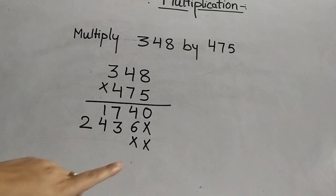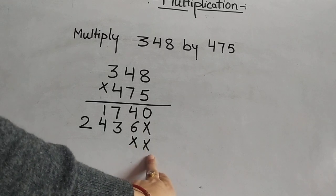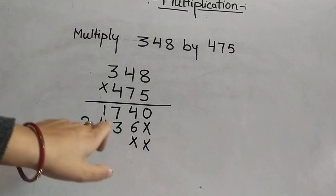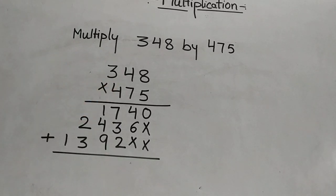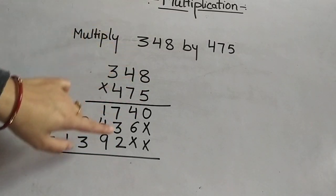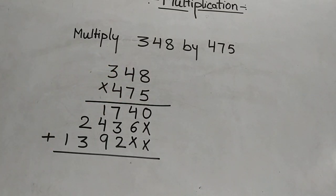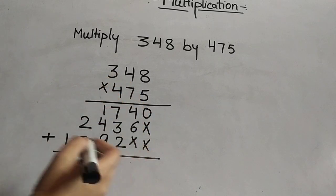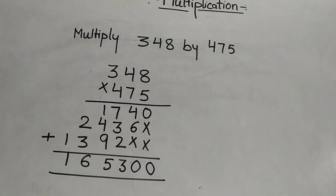Because we have multiplied by the ones digit as well as the tens digit, we will cross in these 2 places — ones and tens. Now we have to multiply by the digit in the hundreds place, that is 4. 4 times 8 is 32, 3 carry. 4 times 4 is 16 plus 3 is 19, 1 carry. 4 times 3 is 12 plus 1 is 13. Now let us add these 3 lines. This is the multiplication by a 3-digit multiplier.